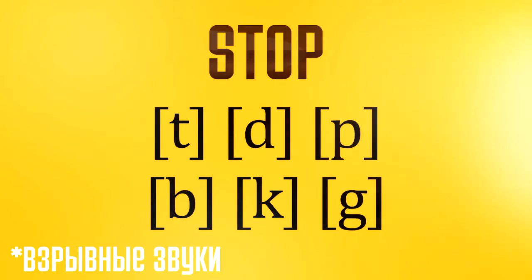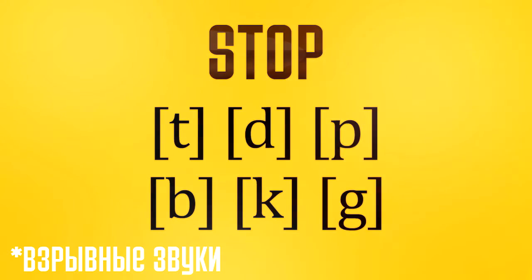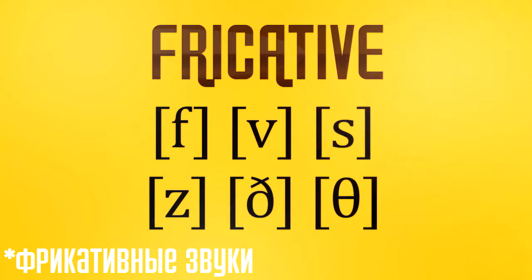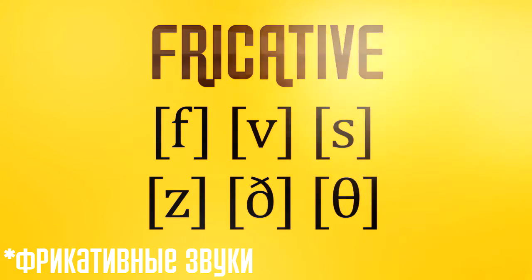Stop: complete blockage followed by sudden release, as in T, P, K, B, D, G. Fricative: incomplete blockage but still close enough to cause significant airflow turbulence, as in F, S, TH (voiceless), V, Z, TH (voiced).